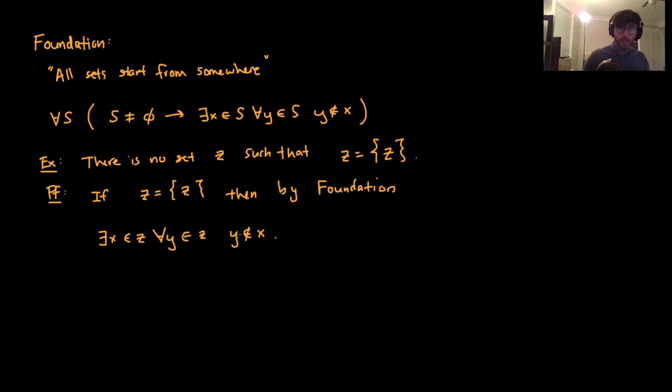Well, what has to happen? It must be that if there's an X in Z so that something happens, the only element of Z is itself. So since there's an X in Z, we must have that X is equal to Z. And where does the contradiction, where do we get this contradiction?